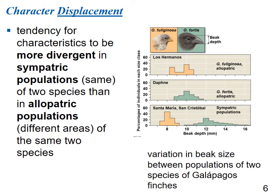Character displacement is the tendency for characteristics to be more divergent in sympatric populations than allopatric populations. Sympatric means living in the same area; allopatric means separated by a geographic barrier. Two species of finches on the Galapagos — G. fuliginosa and G. fortis — show this: when living separately on different islands, their average beak depth is similar, but when both species live on the same island, their beak depths diverge, with one species having a smaller average and the other a larger average.